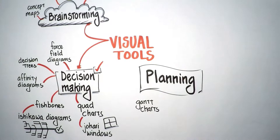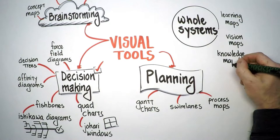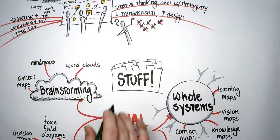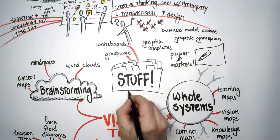You have your planning tools like Gantt charts, swim lanes, and process maps. You have your whole systems tools like learning maps, vision maps, knowledge maps, and context maps. Plus there's all the cool stuff that you get to use: whiteboards, groupware, templates like the Business Model Canvas or the Graphic Game Plan, and my own personal favorite, paper and markers.